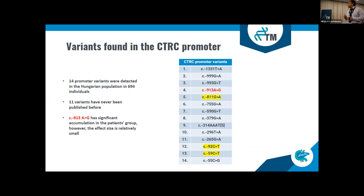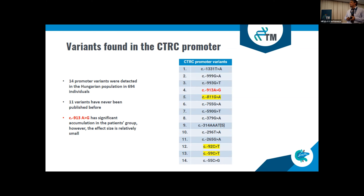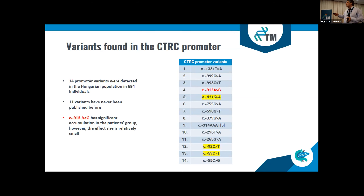We found a total of 14 CTRC promoter variants in the Hungarian cohort. Three of them, highlighted in yellow, are already known and confirmed to be non-pathogenic regarding pancreatitis. The others are not yet published. I highlighted the minus-913 A>G mutation because we found some association with chronic pancreatitis, which I will highlight in the following slides.